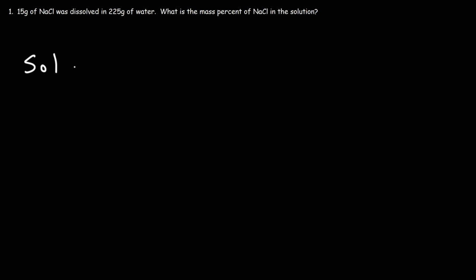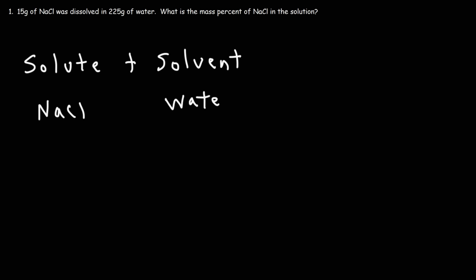You need to be familiar with the difference between the solute and the solvent. In this example problem, we have sodium chloride dissolved in water. The solute is the stuff that's being dissolved — in this case, that would be salt or sodium chloride. The solvent is the stuff that is doing the dissolving, so water is the solvent. The solute is dissolved by the solvent. When you combine these two, you get the solution: solute plus solvent equals solution.